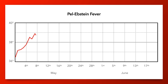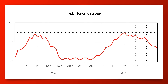The Pel-Epstein fever is a phenomenon that may be seen in patients with Hodgkin's lymphoma. It is characterized by fevers that gradually rise and fall across 1 to 2 weeks, interspersed with afebrile periods of similar duration. More simplistically, patients with Hodgkin's disease may show a fever that is high for one week and low for the next. A similar pattern may be seen with Borreliosis.